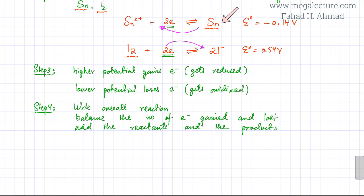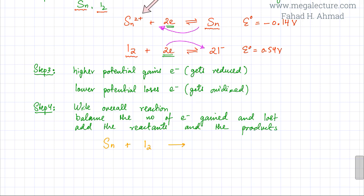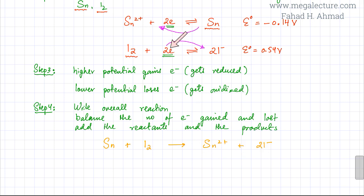The next step is to add the reactants and products to get an overall equation. The reactants are Sn from the first reaction going in the backward direction, and I₂ from the second reaction going in the forward direction. So it's Sn + I₂. The products are Sn²⁺ from the first reaction and 2I⁻ from the second reaction. The two electrons gained and the two electrons lost are automatically cancelled out.